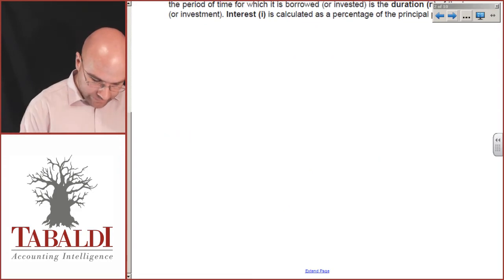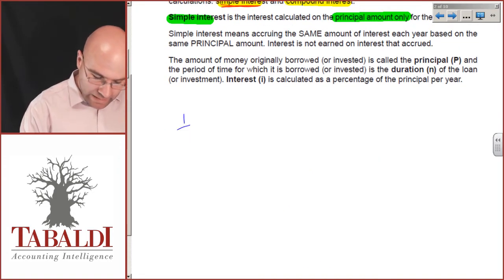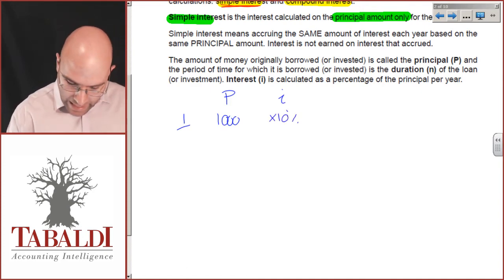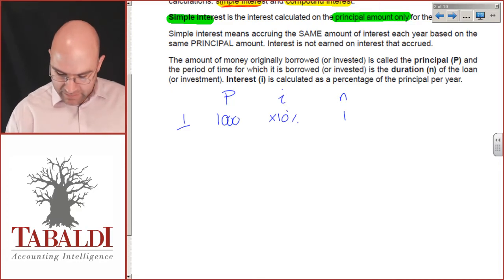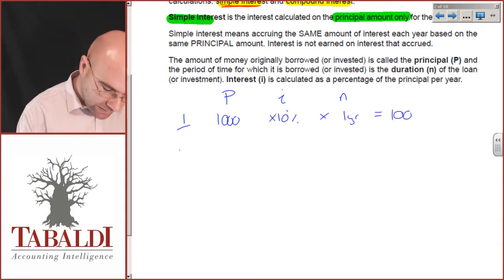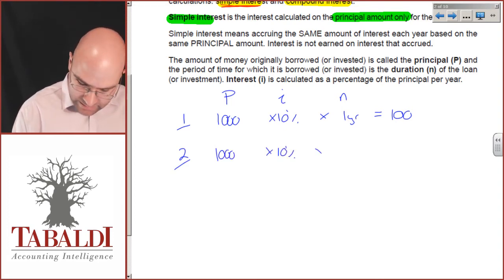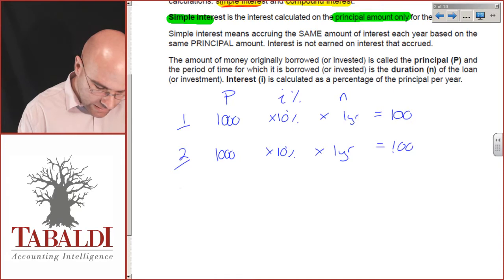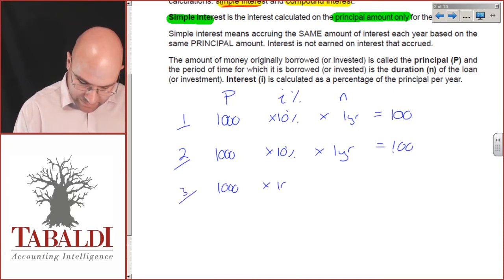So, we will have period one and we'll have the principal amount of whatever, a thousand rand. Then, we'll have interest. Let's say that's 10%, and it's 10% per annum, and we're going to have one year. So, a thousand times 10% times one year will give us 100. And if we have a second year, again, we'll have a principal of a thousand times 10% times one year, which will give us another 100 rand interest. And year three, again, we'll have a thousand times 10% times one year gives us another 100.